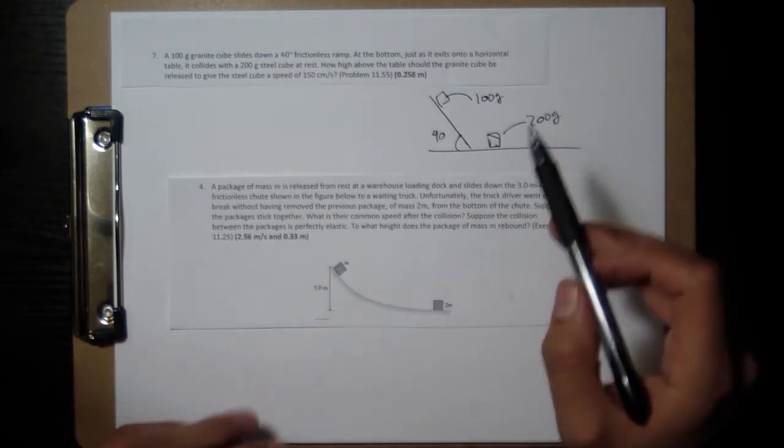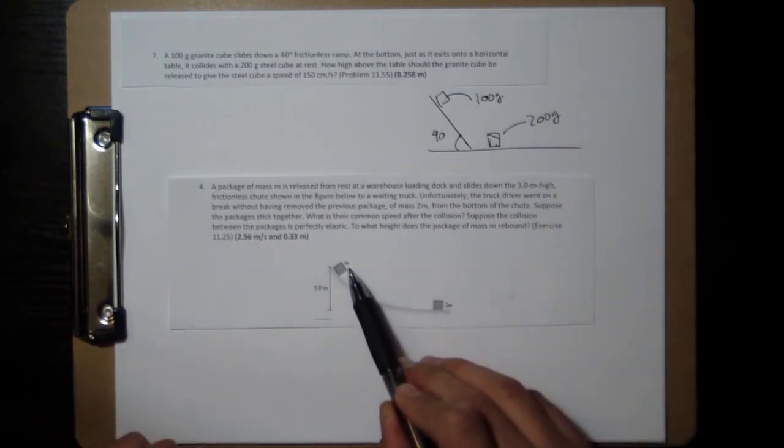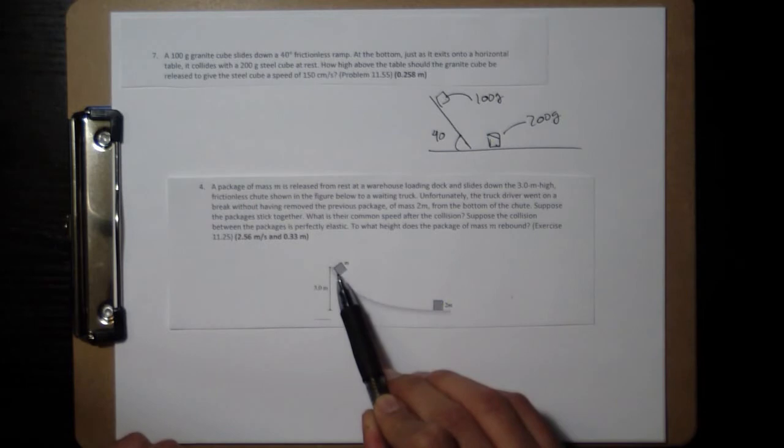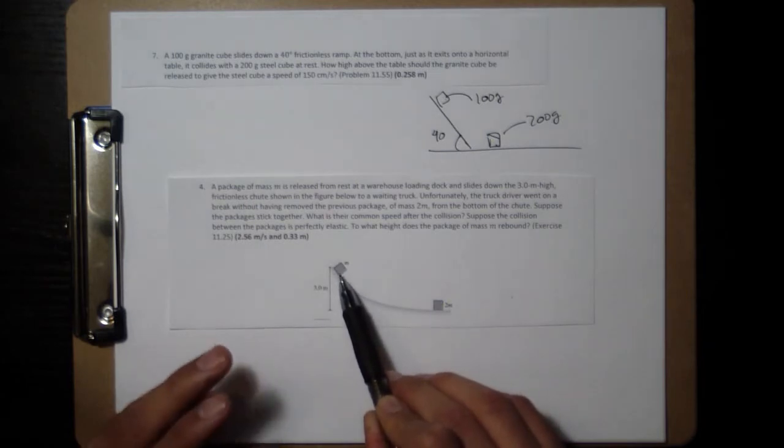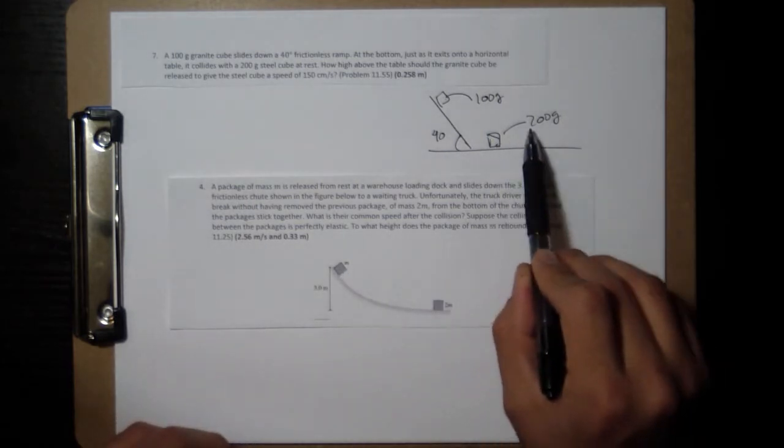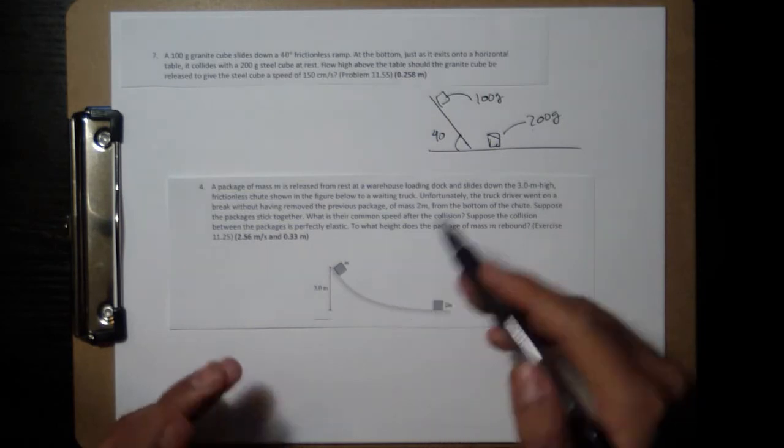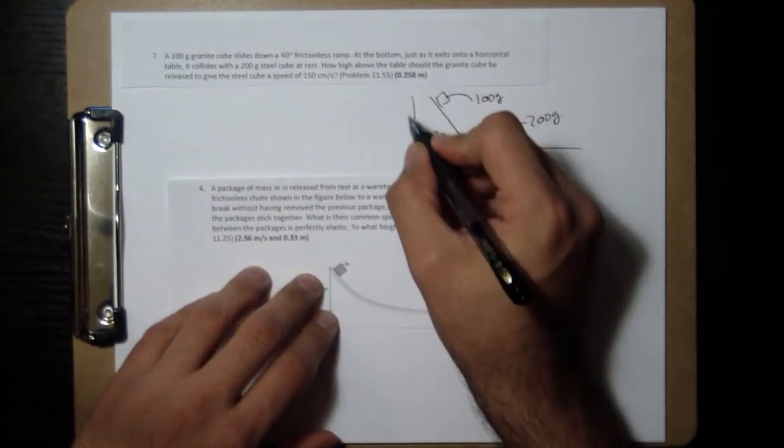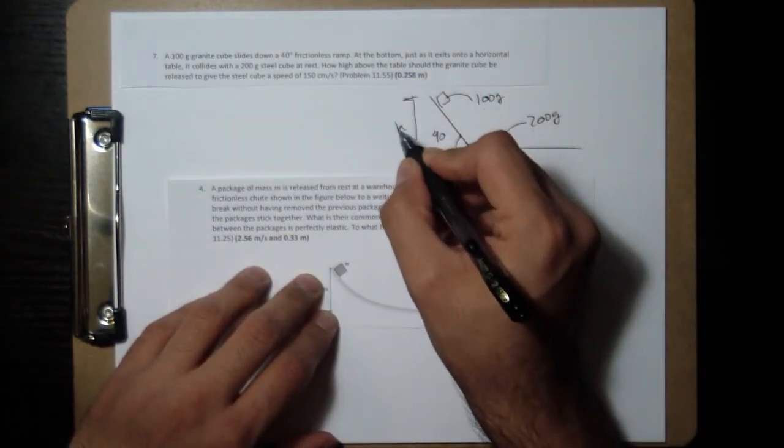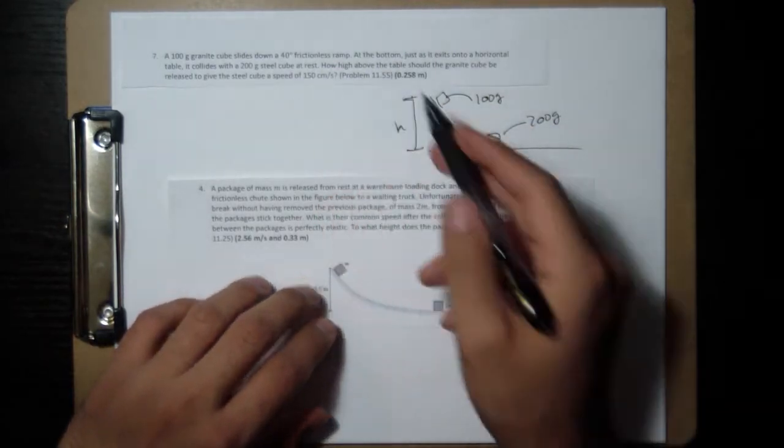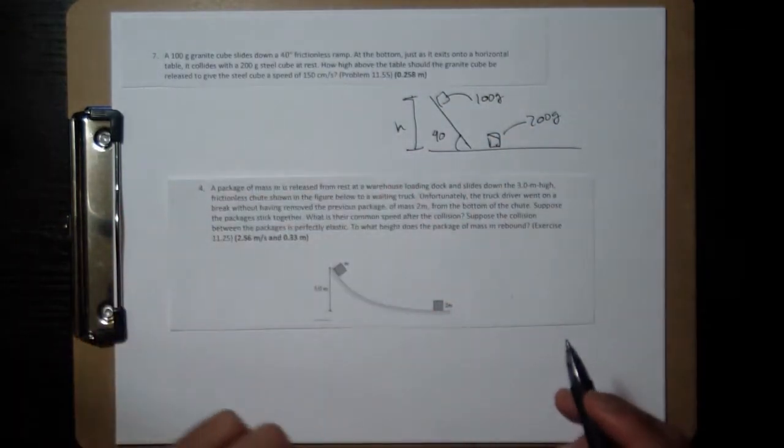And the math turns out very similar because you have this mass being twice as much as this one. Same thing over here. This object has twice the mass of this one. And so, what we're going to look for is this height over here to give this a final speed of 150 centimeters per second.